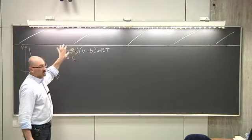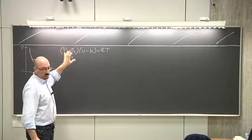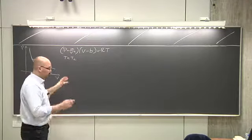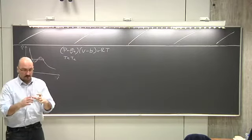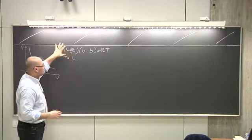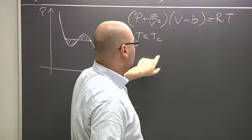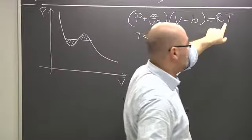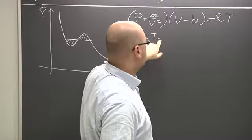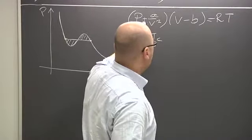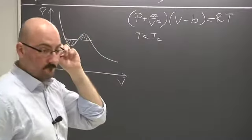My answer to your question is: either with a computer, pen and paper, or a graphical calculator — take this equation, solve it for P, write P as a function of V, put T as a constant less than Tc, find the value of Tc as a function of a and b, and plot it as a function of V. You will see that it has this shape.